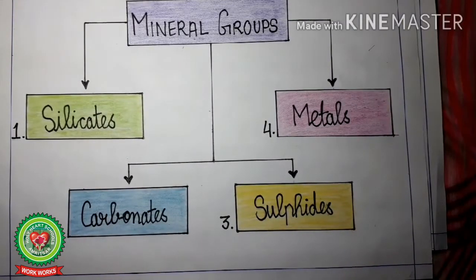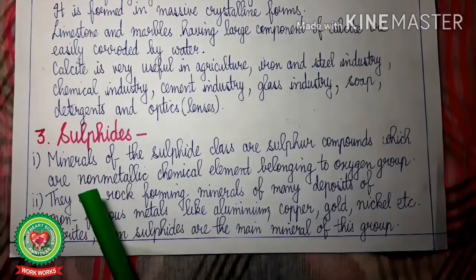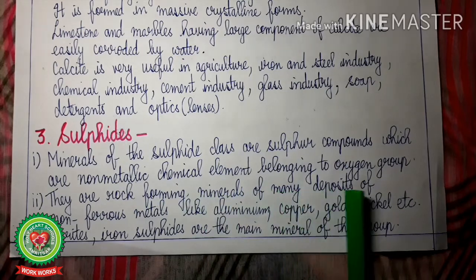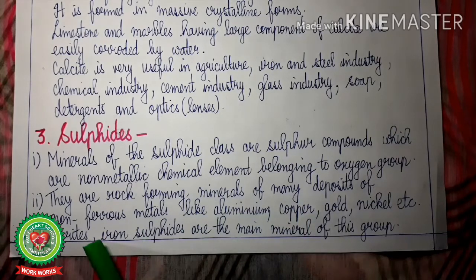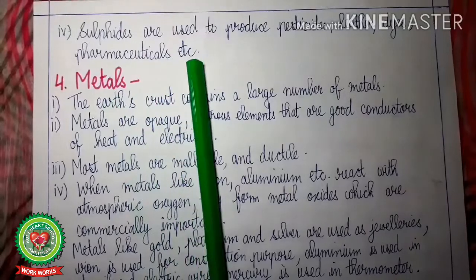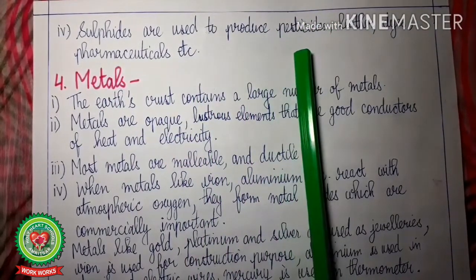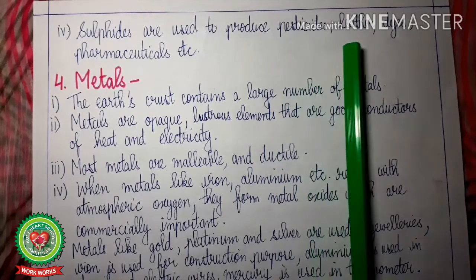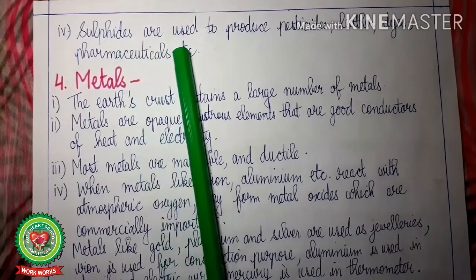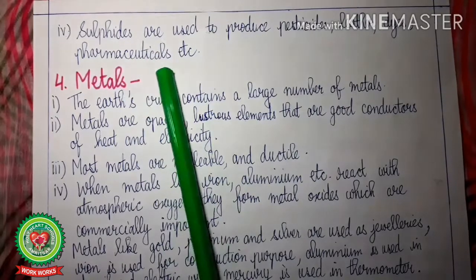Now let us discuss the third mineral group — Sulphides. Minerals of the sulphide class are sulphur compounds, which are non-metallic chemical elements belonging to the oxygen group. They are rock-forming minerals of many deposits of non-ferrous metals. Non-ferrous metals are metals which do not contain any iron, like aluminium, copper, gold and nickel. Pyrites — iron sulphide — is the main mineral of this group. Sulphides are used to produce pesticides, leather, dyes and pharmaceuticals.